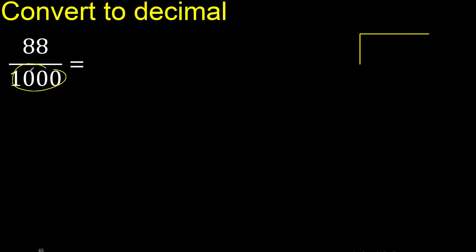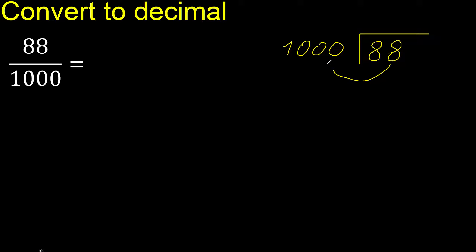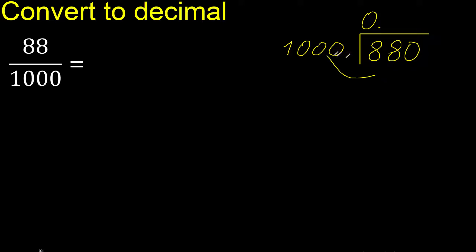88 divided by 1000. Since 88 is less than 1000, we complete with 0 here — 0 point. It is less, so complete: 0, 0. Point only once.